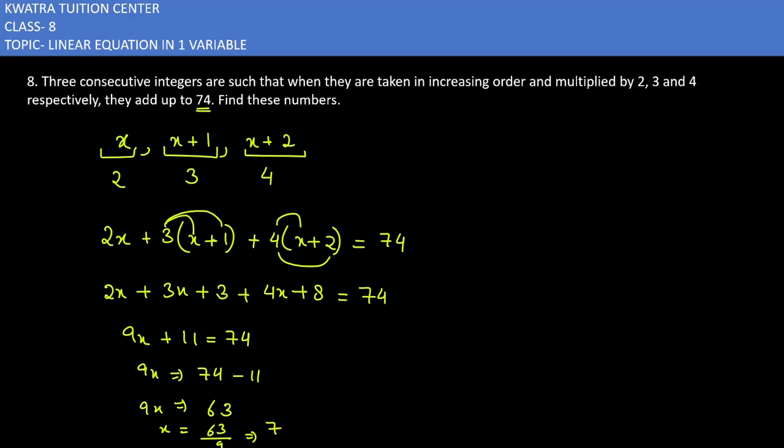So the first number is 7, the second number is 8, and the third number is 7 plus 2 which is 9.